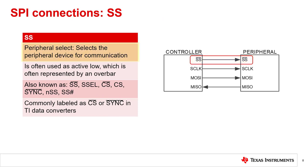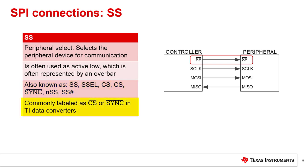SS is the peripheral select line, used to select the peripheral device for communication. If there are multiple devices on the SPI bus, each device has its own peripheral select. Peripheral select is often active low, indicated by an overbar — when the device is selected, peripheral select goes low; when not selected, it is set high. It may also be labeled as SSEL, CS, CS-bar, CE, NSS, or SS. In many TI precision ADCs, this line is commonly labeled as CS-bar, and in many TI precision DACs, it is labeled as SYNC-bar, both active low.